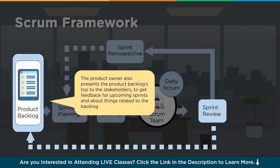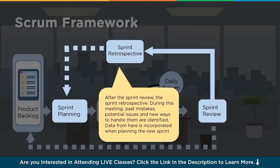The product owner presents the product backlog to stakeholders to get feedback for upcoming sprints. For the next sprint, the product owner speaks with stakeholders to understand what needs to be delivered and the priority. Then the sprint retrospective happens after the sprint review - during this meeting, what went well, past mistakes, potential issues, and new ways to handle them are identified. Data found here is incorporated when planning the new sprint - it works like a lessons learned discussion.